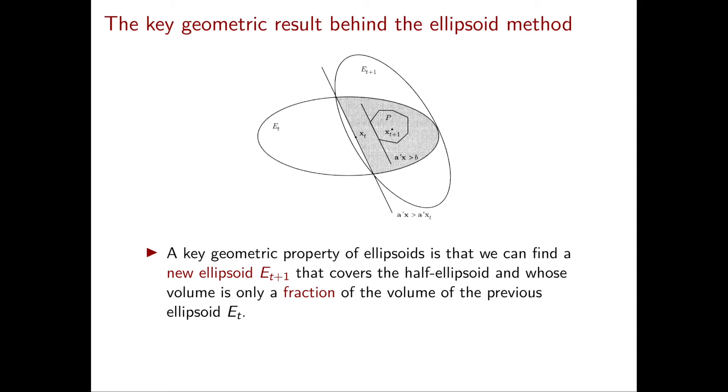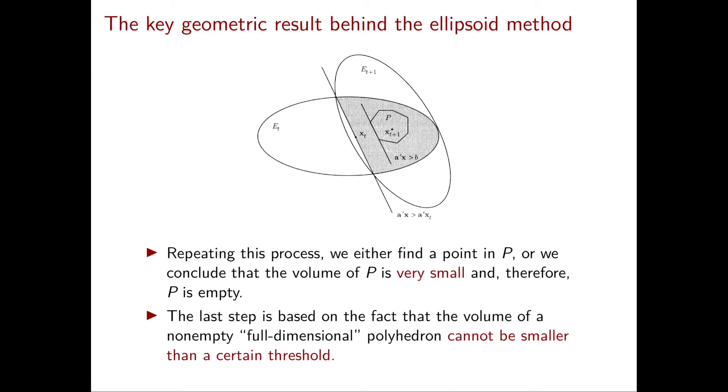Now the remarkable feature of the ellipsoid method is that it guarantees that the volume of the new ellipsoid is only a fraction of the volume of the previous ellipsoid. You can see now that repeating this process either we find eventually a point in the polyhedron or we keep generating smaller and smaller ellipsoids.